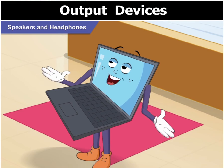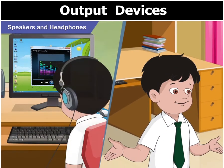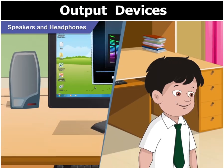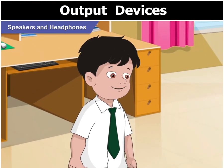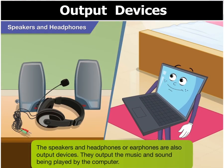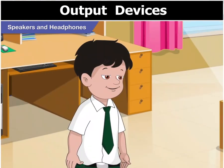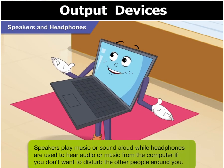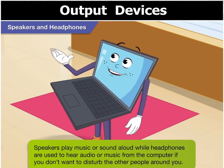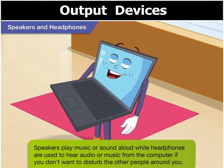Toggle, which device do you use to listen to music on your computer? I sometimes use the speakers and sometimes I use headphones. Toggle, speakers and headphones or earphones are also different types of output devices. They output the music and sound being played by the computer. Oh yes! I understand now! Speakers play music or sound aloud,